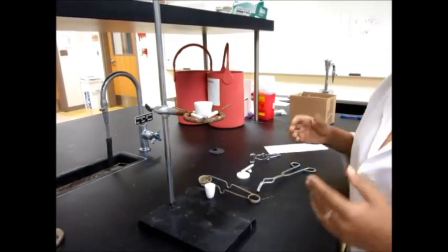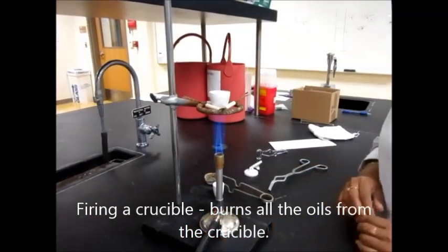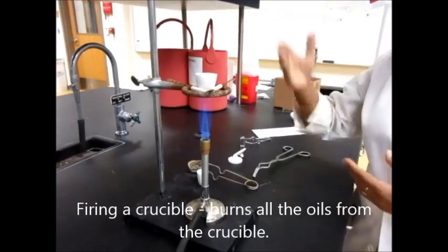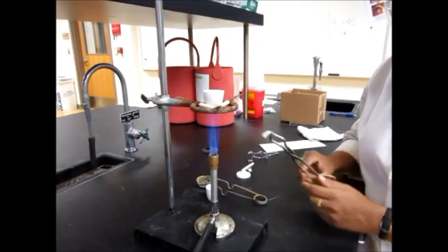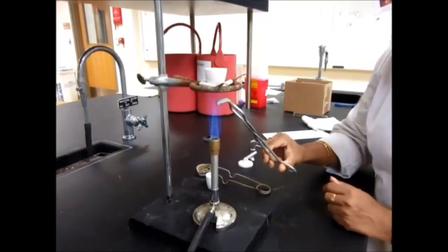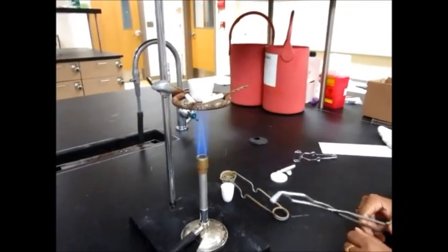If you're just firing a crucible, you are all set now. Go ahead and place the Bunsen burner underneath your crucible and you're all set to go. You can see that the inside cone is right underneath the crucible, which is what you want because you want intense heating usually in a crucible, depending on the experiment.